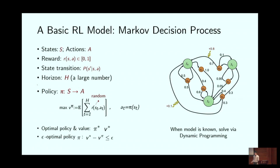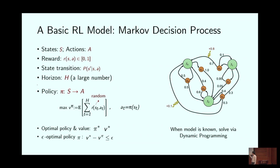This MDP is specified by the set of states, set of actions, and a reward function normalized to be between zero and one, plus a probability transition. Because it's an episodic MDP, we consider the horizon H — how many steps you take. We are considering the policy that achieves good expected reward. A policy is a map from states to actions, and the reward is the expected cumulative reward along the horizon H.